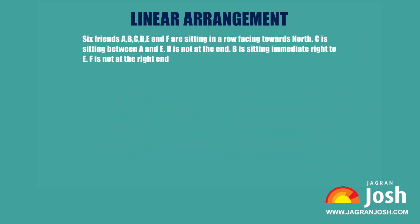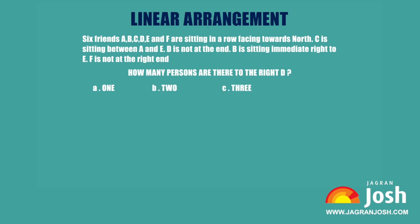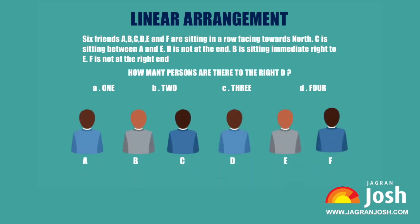Example: Six friends A, B, C, D, E, and F are sitting in a row facing towards north. C is sitting between A and E. D is not at the end. B is sitting immediate right to E. F is not at the right end. How many persons are there to the right of D? Options: A) one, B) two, C) three, D) four.